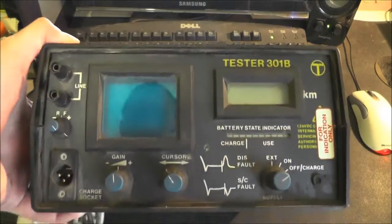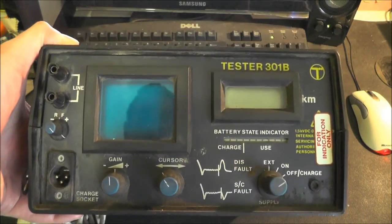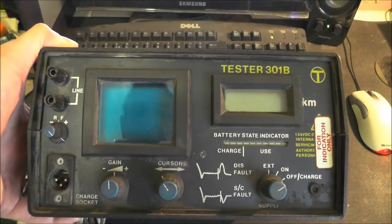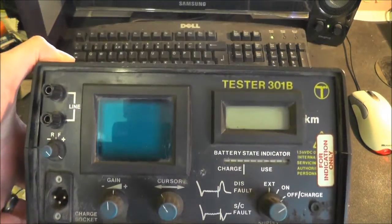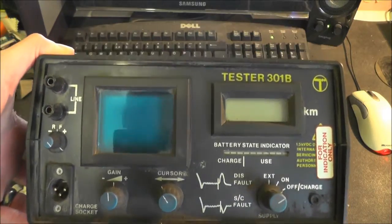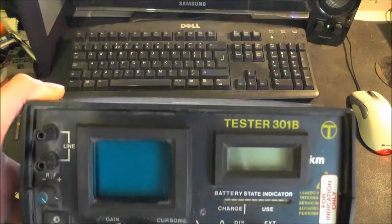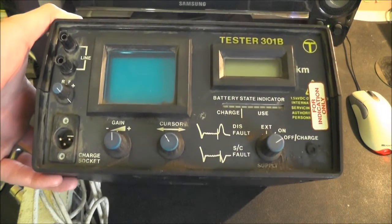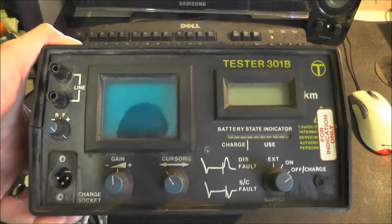So it's designed for looking at faults in cables. Obviously those in the UK will recognise the old BT logo there, so this is designed for doing telephone cables. I'd say this probably dates from the mid-90s but on the inside it looks at an earlier design than that even to be honest.